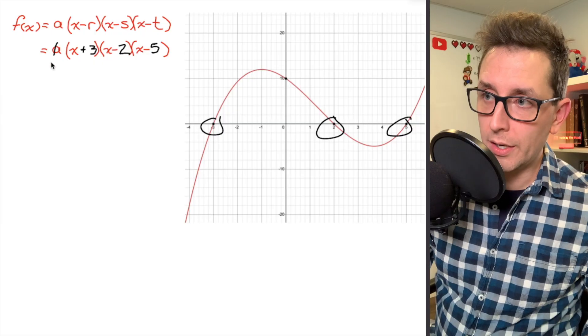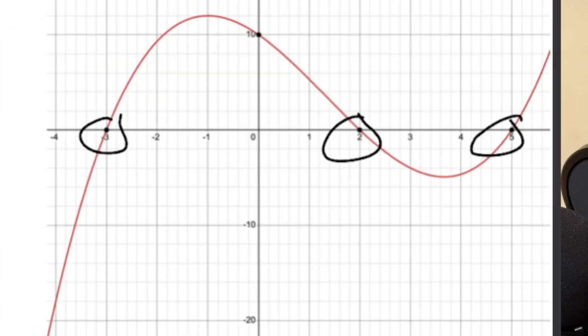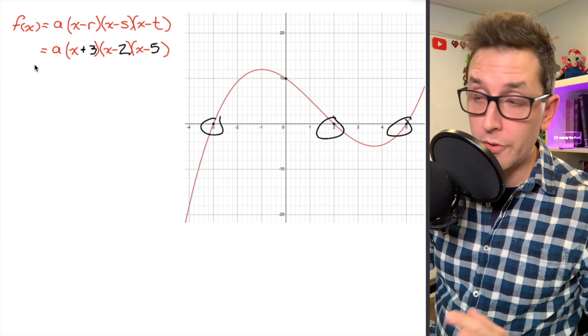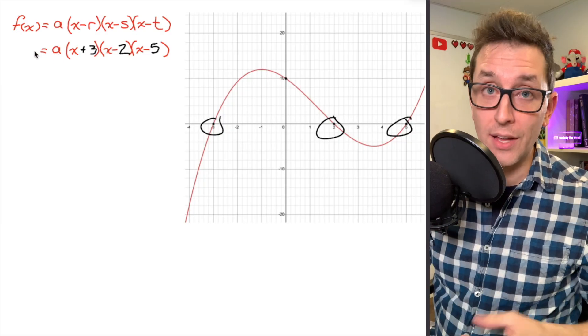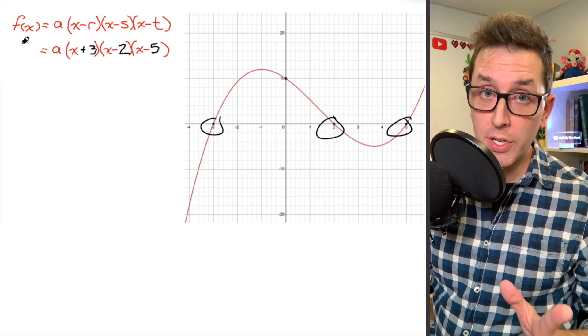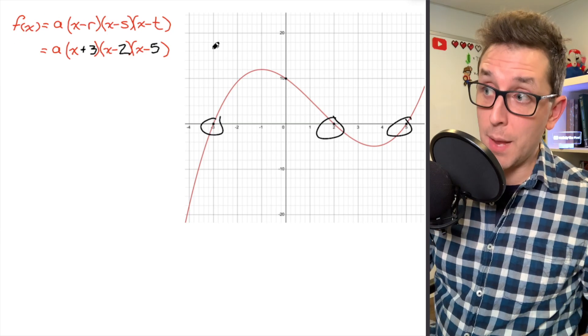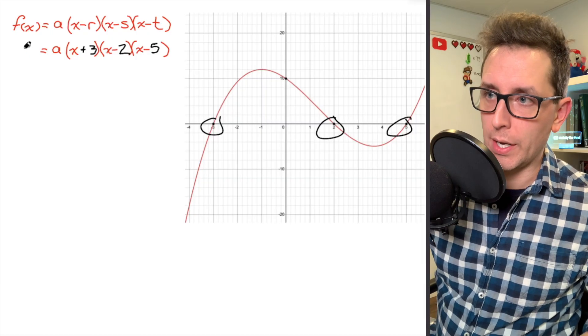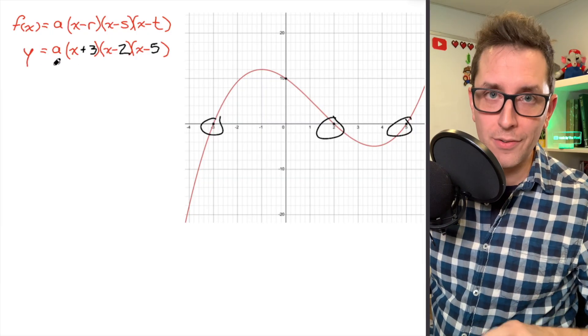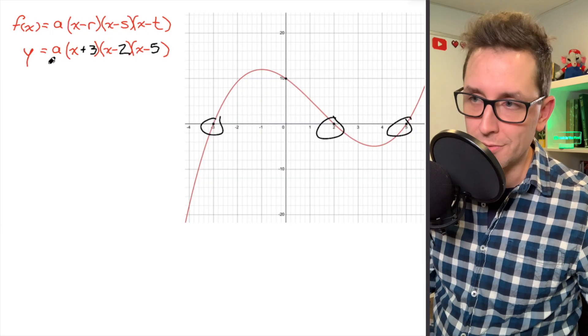So what I want to do is show you a way that you can determine the value of a so that we can finalize our polynomial equation. The trick here is remembering that that notation, f of x, that's the name of this function. We're assuming it's f of x. That's just the same thing as writing y. I'm going to just write a y there for a moment.